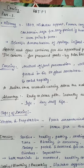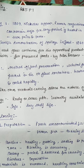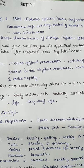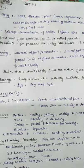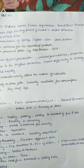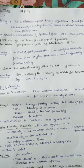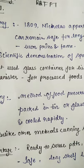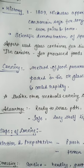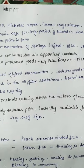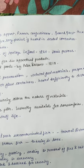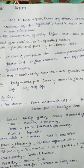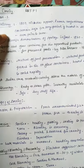The French government offered a prize of 12,000 francs and fame to anyone inventing a useful method of food preparation in 1795. In 1809, Nicolas Appert, a French confectioner, found that food can remain safe for a long period if heated in a sealed container. He won the prize and fame from the French government.